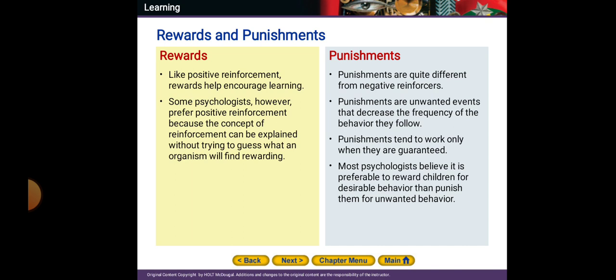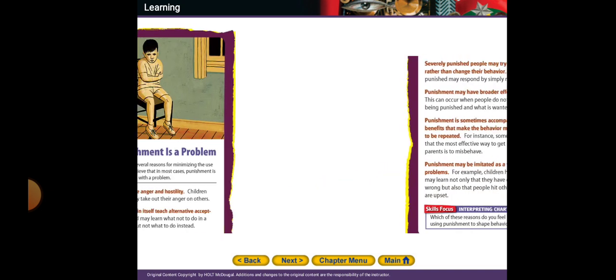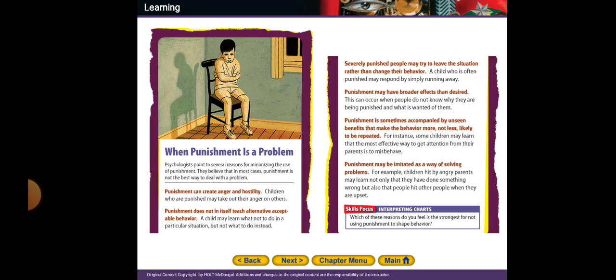Punishments are quite different from negative reinforcers. Punishments are unwanted events — you will do something and I will punish you. I want to decrease the frequency of the behavior they follow. Punishments tend to work only when they are guaranteed. Most psychologists believe it's preferable to reward children for desirable behavior than to punish them for unwanted behavior, because punishment has a lot of negative consequences.